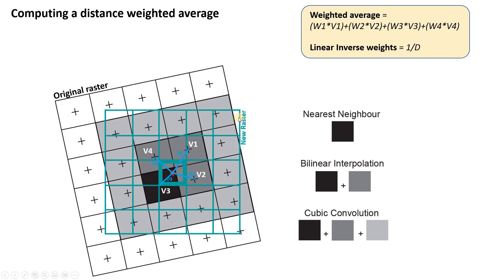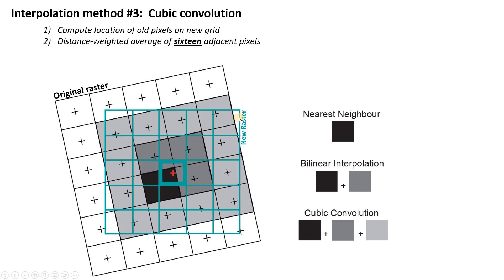Our third and final method is cubic convolution, which is the exact same concept, except now we perform a distance-weighted average of the 16 closest pixels instead of just four.